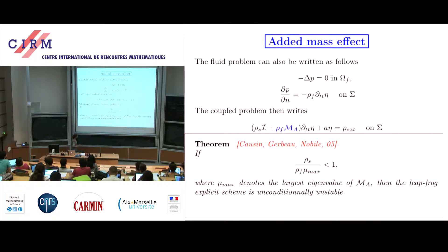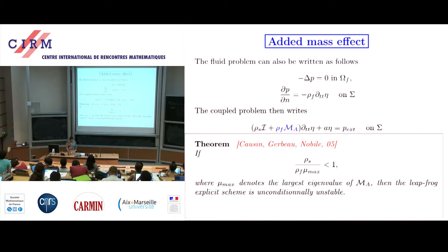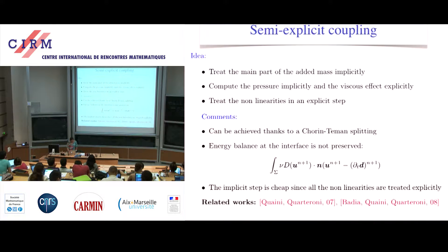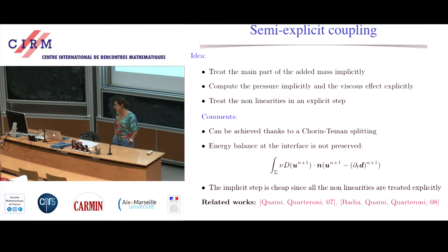The eigenvalue depends on the length and the diameter of the cylinder, so it depends on the geometry. You will have more trouble if you have a long cylinder than if you have a short one. The idea is to treat in an implicit way the added mass effect.